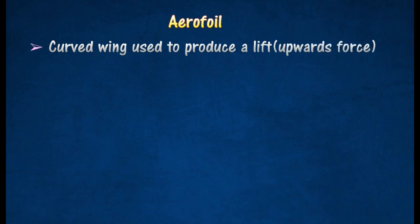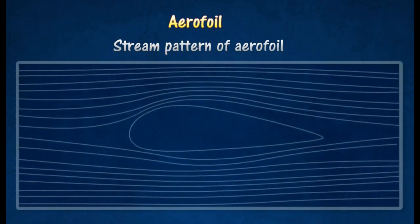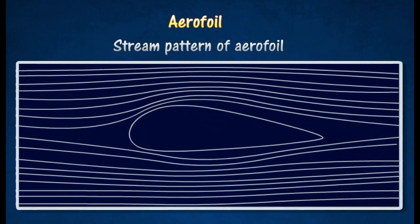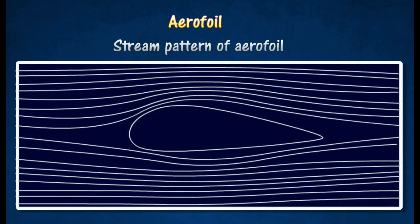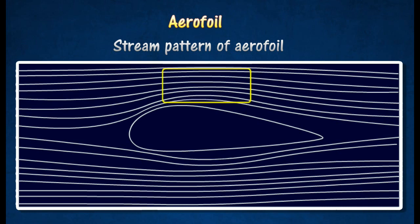An airfoil is the curved wing used to produce a lift. The figure shows the smoke stream pattern in a wind tunnel that demonstrates the pattern of airflow past an airfoil. It is observed that the smoke lines are close together above the airfoil where the airspeed past the airfoil is greater.